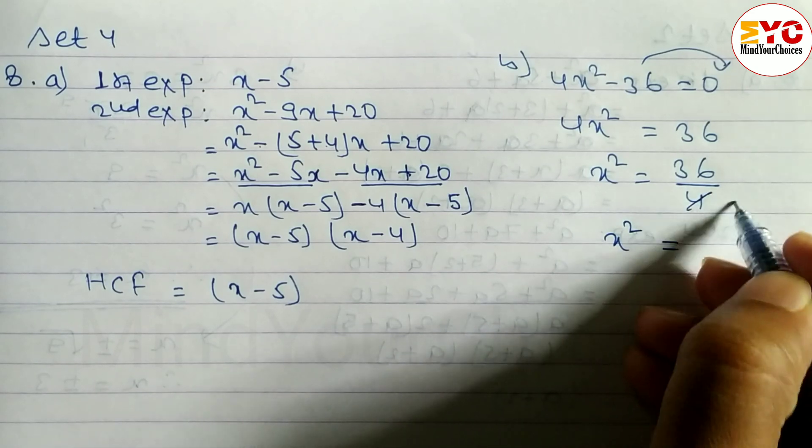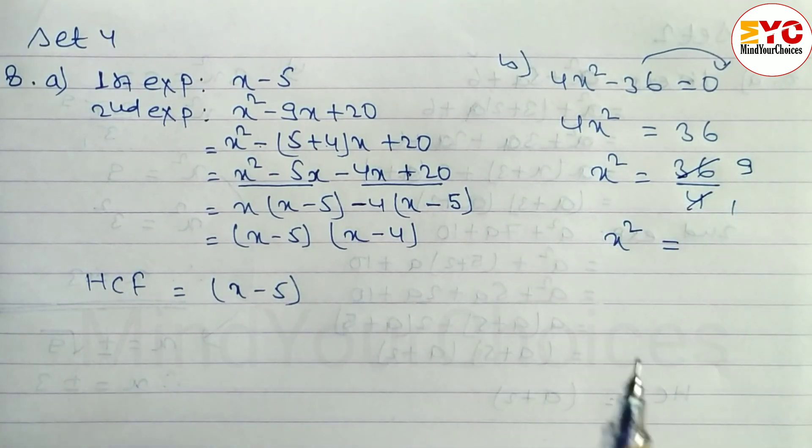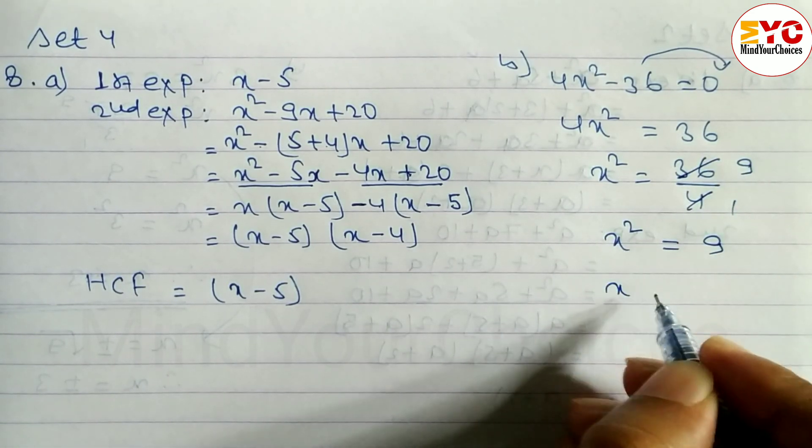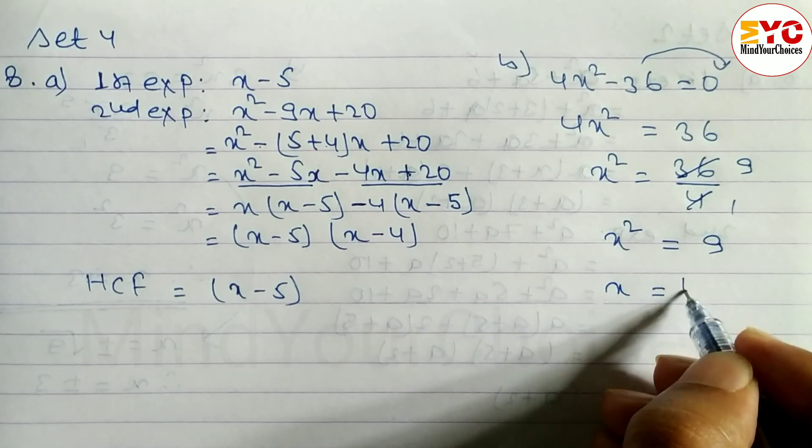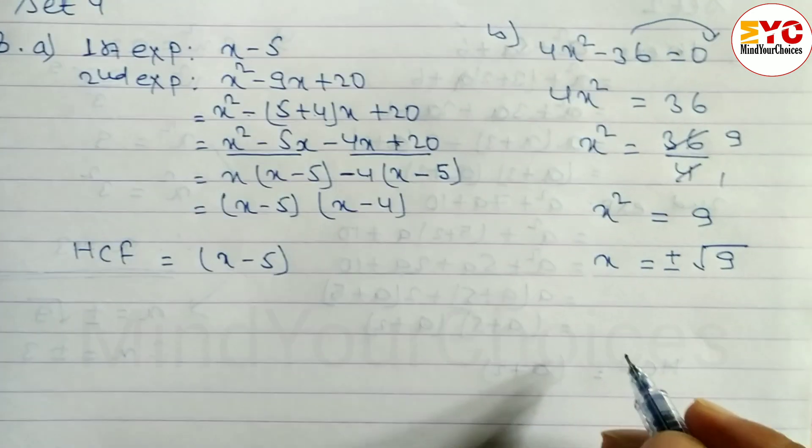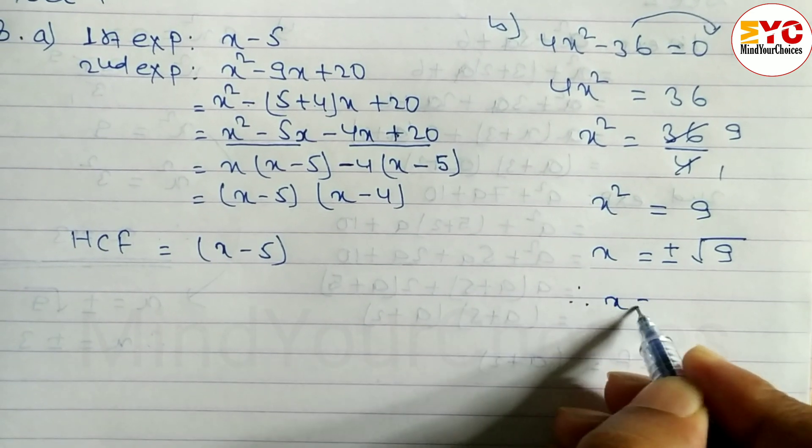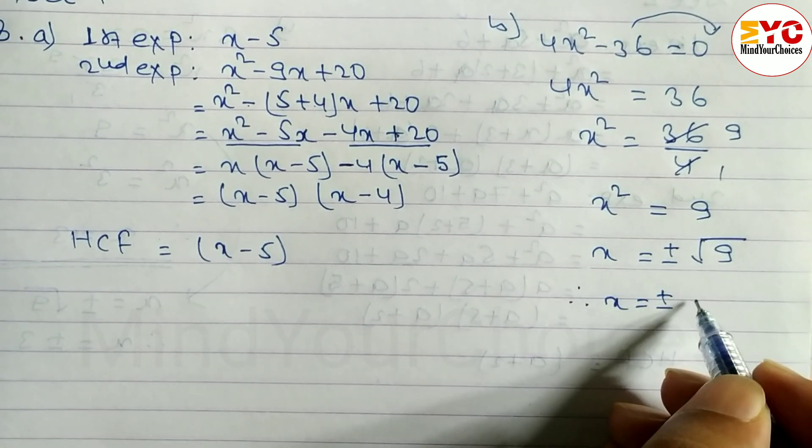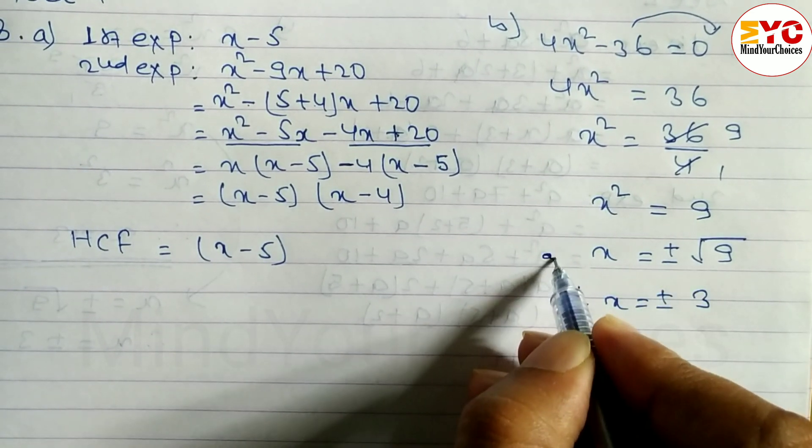So x is equal to, 4 into 9 is 36, we write 9. x is equal to, when we square root, plus minus root. Here 9, we write 9. Okay? Therefore, x is equal to plus minus root 9, which is what? 3. Okay up to here?